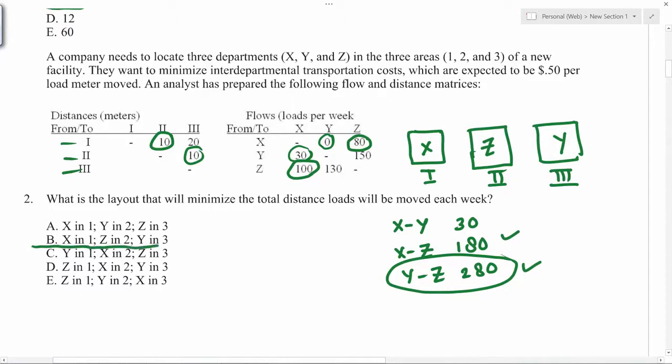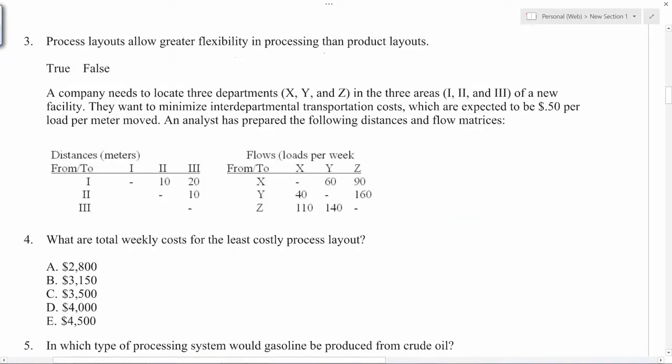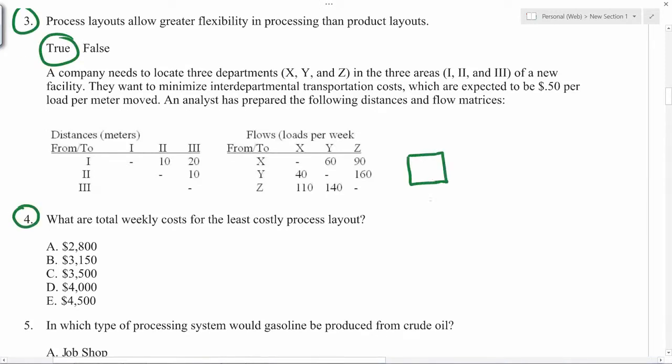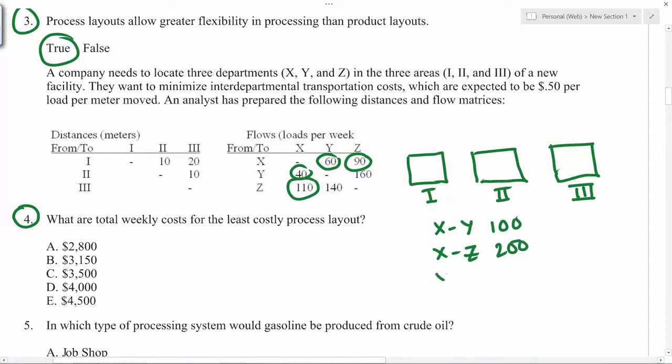Process layouts allow greater flexibility - that's true. Let's call location one, and two are close by, so next one is two and this is three. Between X and Y you can see the total load is 60 and 40, so hundred. Between X and Z, 90 and 110, so 200. Similarly, between Y and Z you have 300. So again we can assign X here, and because X and Z has 200, Y and Z has 300, we should keep Z in the middle so that it is closer to both X and Y.